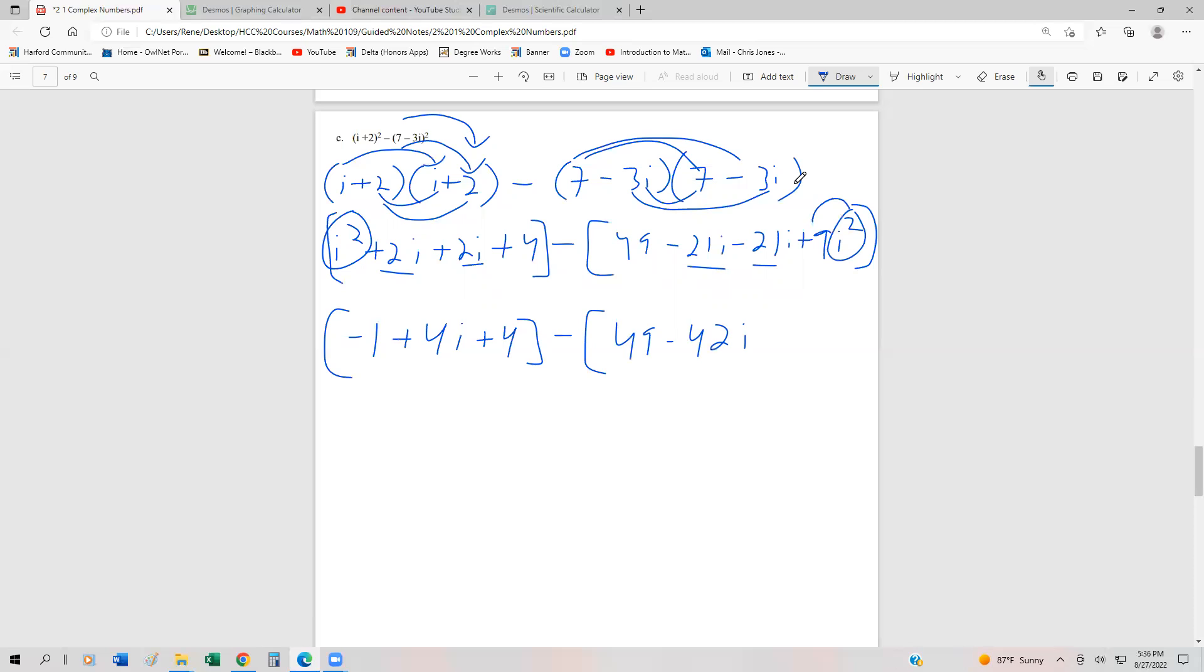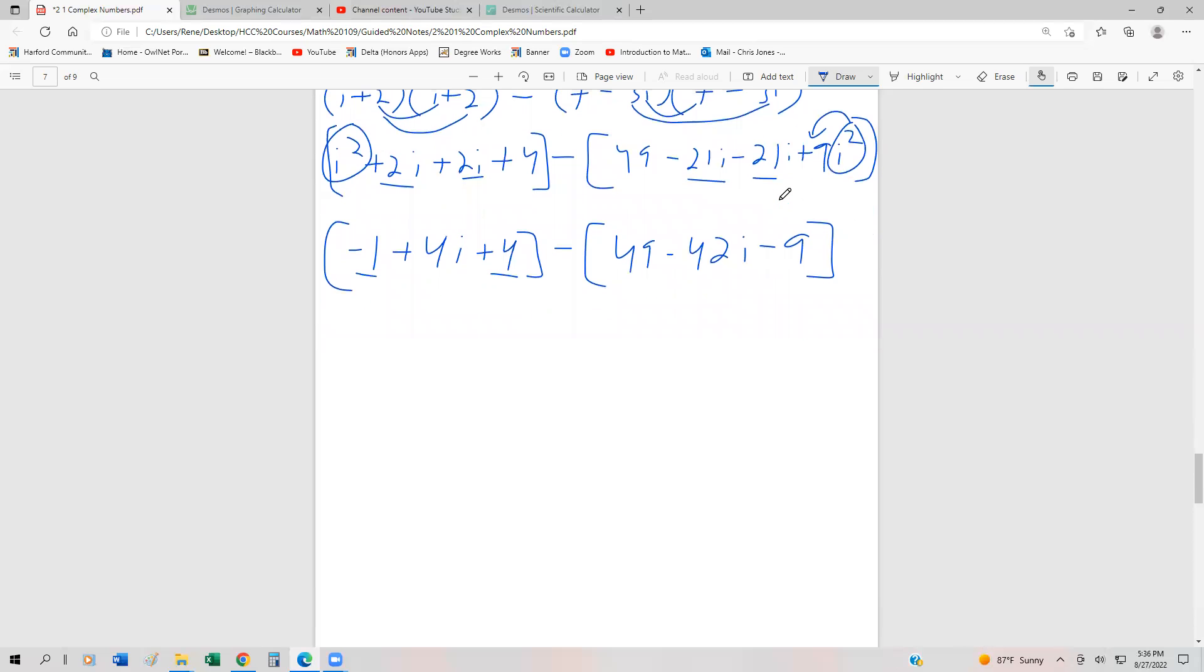Remember, i squared just changes the sign in front because it's a negative 1. That's minus 9. Combining inside the brackets, negative 1 and 4 is 3. So we get 3 plus 4i minus – we have 49 minus 9, which is 40, minus 42i.